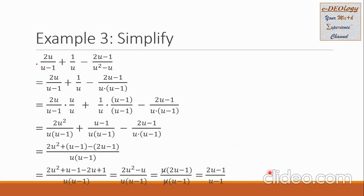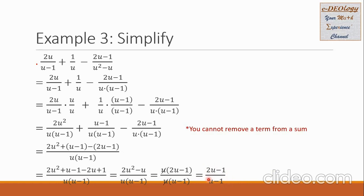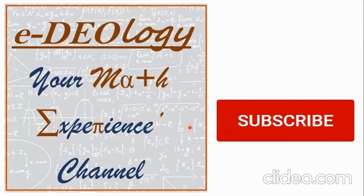The next question is: can we simplify further by canceling the u's or the −1 terms in the numerator and denominator? There is an important note: we cannot remove a term from a sum. The expression (2u − 1) is taken as one group and (u − 1) is taken as one group, so no further cancellation is possible. This is our final answer. I hope you learned something from this video — see you next time.